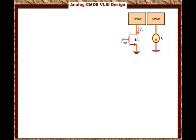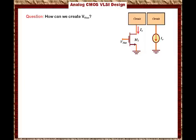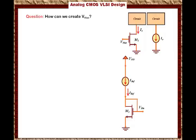The question now is how can we create V_bias. If I have the right V_bias, I will have the right current ISS. The answer is very simple — this is the V_bias circuit. The V_bias circuit has VDD connected to a current source, which we call IREF, and this current source is connected to a diode-connected transistor called M1. If I adjust the value of IREF, I will be able to create a V_bias at the gate of M1.